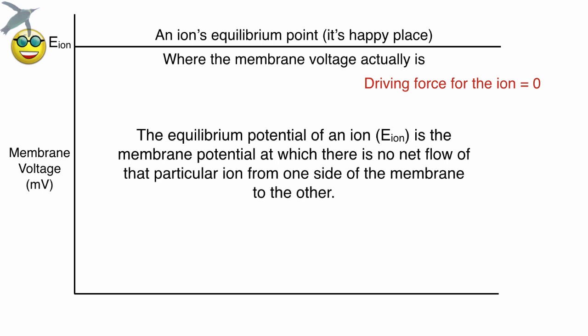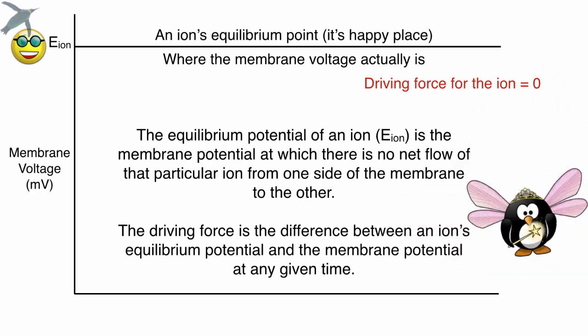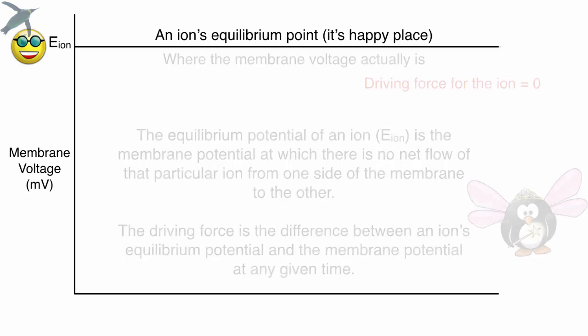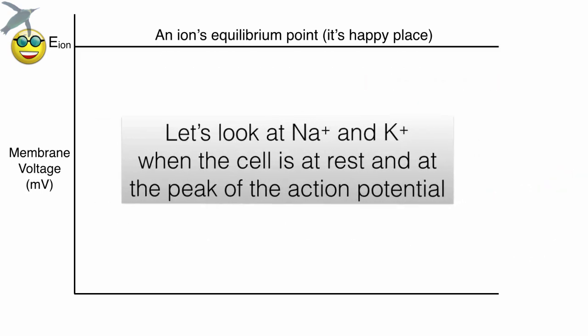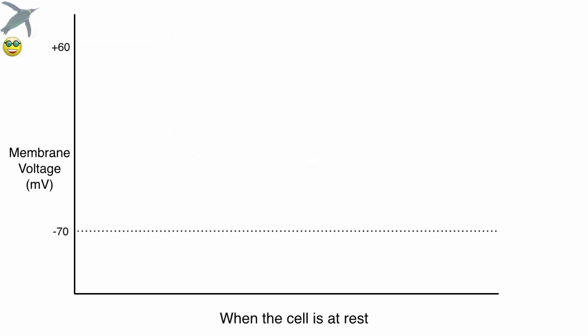So let's go back to those definitions. The equilibrium potential is the membrane potential at which there's no net flow. Because that's the happy point. The driving force is the difference between the ion's equilibrium potential and where the membrane potential actually is. All right. In order to get a better picture, let's look at sodium and potassium. And we're going to look at both of them when a cell is at rest and at the peak of the action potential.